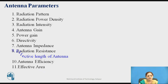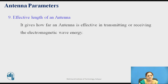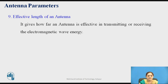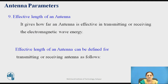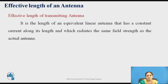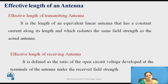The next parameter is the effective length of an antenna. It gives how far an antenna is effective in transmitting or receiving electromagnetic wave energy. The effective length for a transmitting antenna is the length of an equivalent linear antenna that has a constant current along its length and radiates the same field strength as the actual antenna. For a receiving antenna, it is defined as the ratio of the open circuit voltage developed at the terminals to the received field strength.